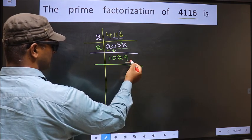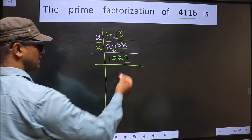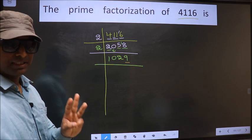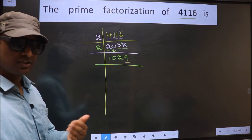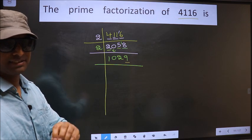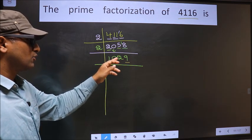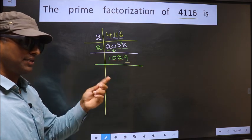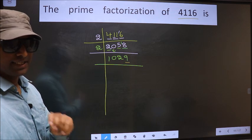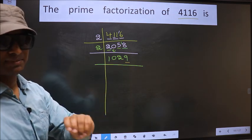For this number, the last digit is 9, not even. So this number is not divisible by 2. Next, prime number 3. To check divisibility by 3, we should add the digits. That is 1 plus 0 plus 2 plus 9, we get 12. Is 12 divisible by 3? Yes. So this number is also divisible by 3.